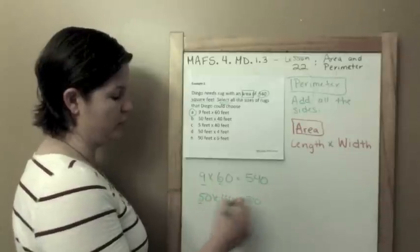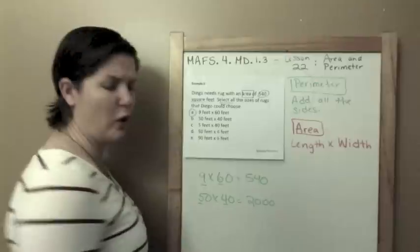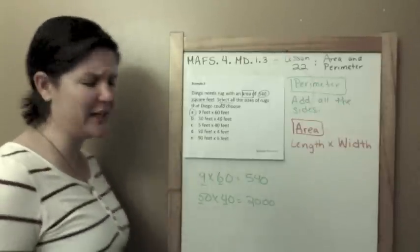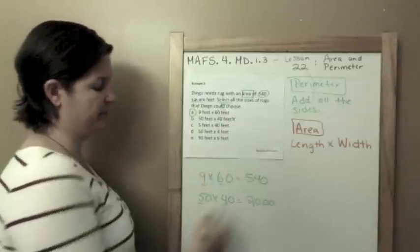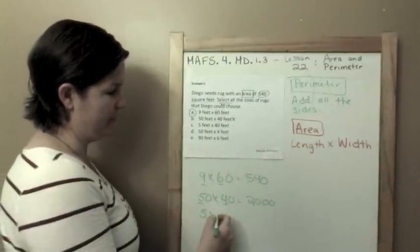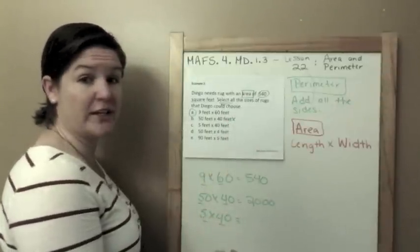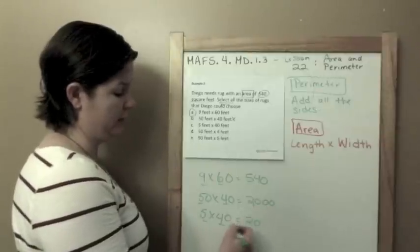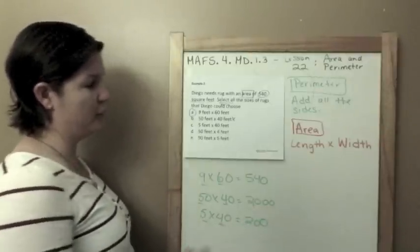B says 50 times 40 feet. So 5 times 4 is 20, one two zeros, one two zeros, woohoo, that's not 540, no sir. 5 times 40 feet, 5 times 4 is 20 plus our zero, add that on, that'd be 200 feet.